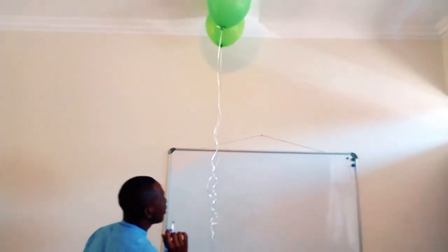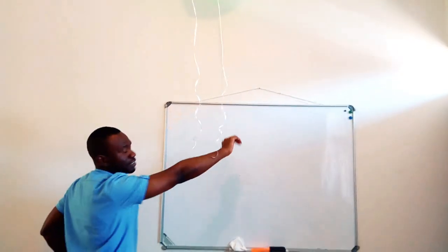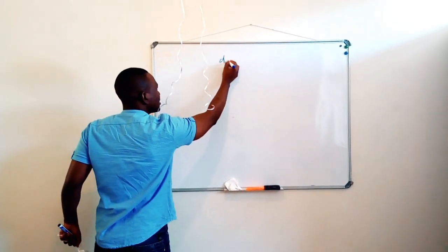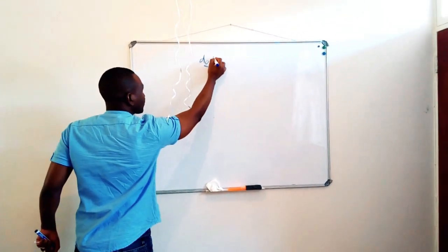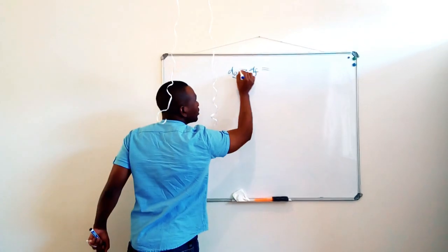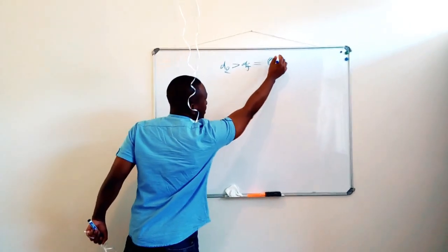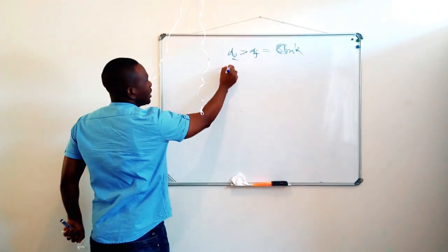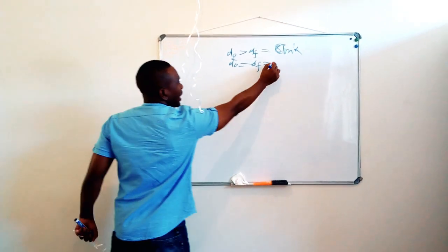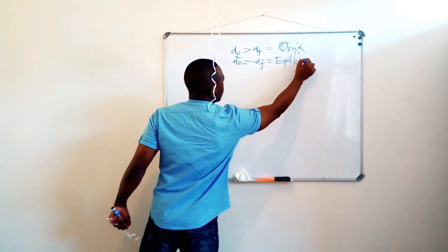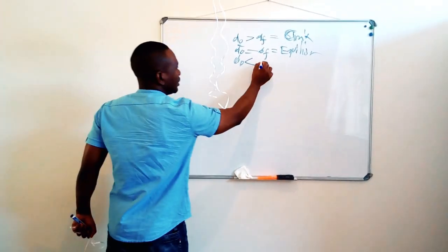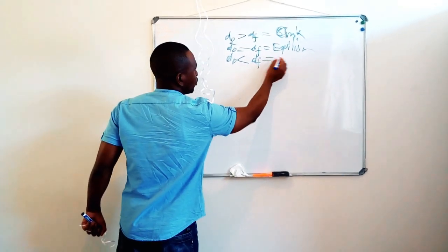Let me break it down for you. Archimedes' principle states that if an object has a density higher than the density of the fluid, then the object will sink. If the density of the object is equal to the density of the fluid, then there will be equilibrium. And if the density of the object is lower than the density of the fluid, then the object will float or go high.